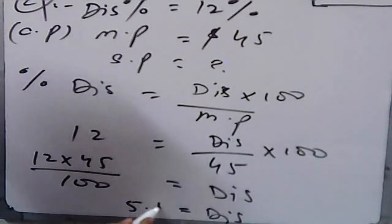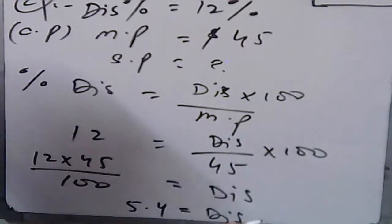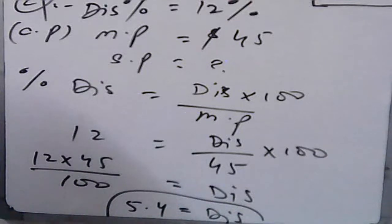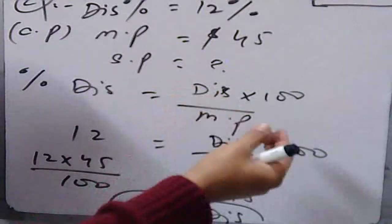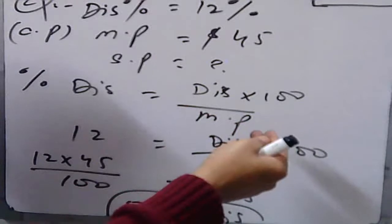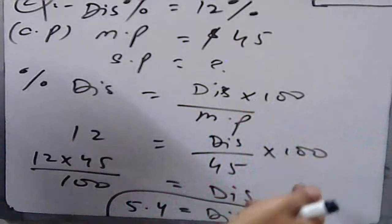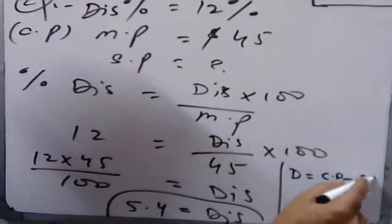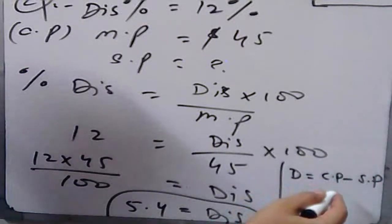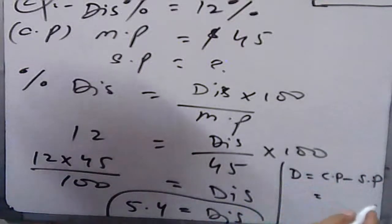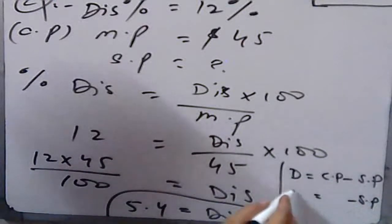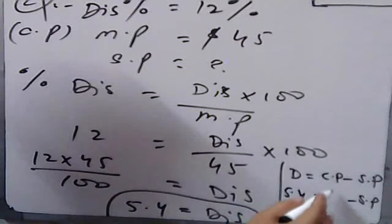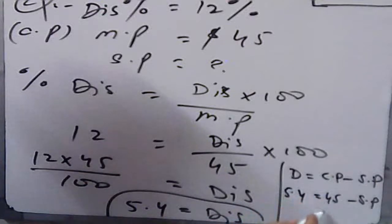The discount value is $5.40. Now we need to find the sale price. We know that Discount = Cost Price − Sale Price, so we can rearrange to find Sale Price = Cost Price − Discount.